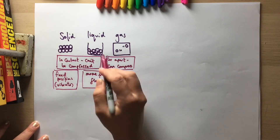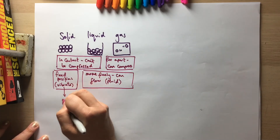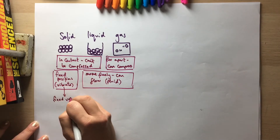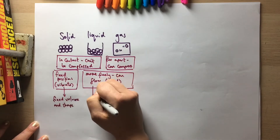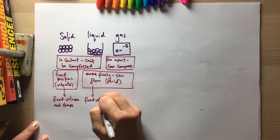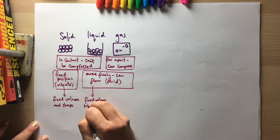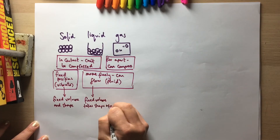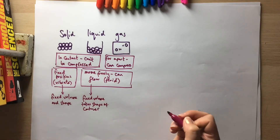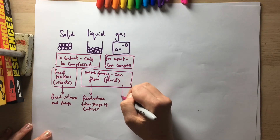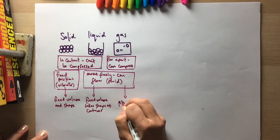That's because these particles can move past each other and move completely freely. A solid has a fixed volume and shape. A liquid has a fixed volume because it can't be compressed, and it takes the shape of the container. A gas has no fixed volume, so it will expand to fill the container.